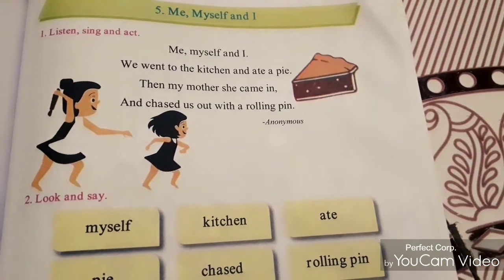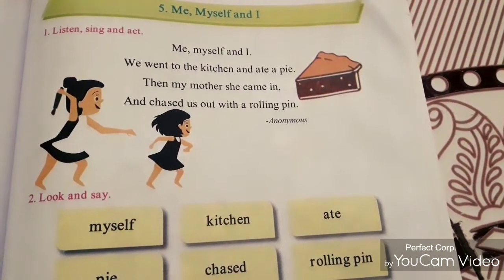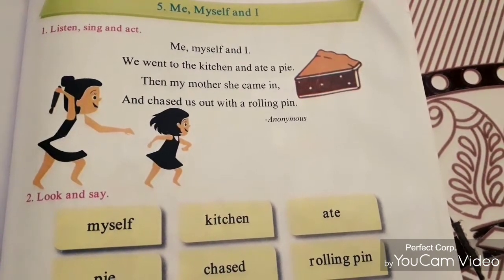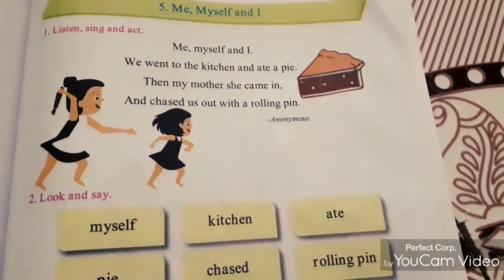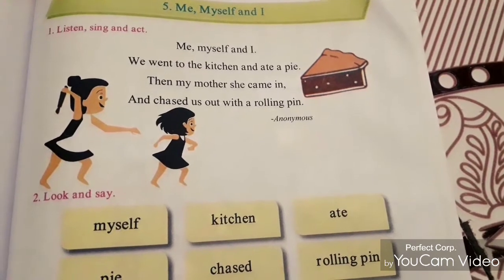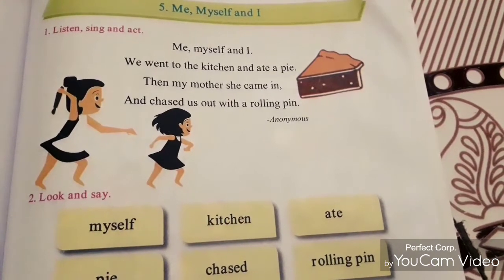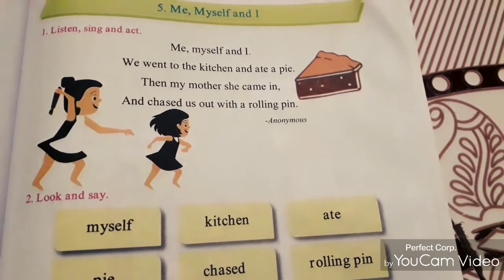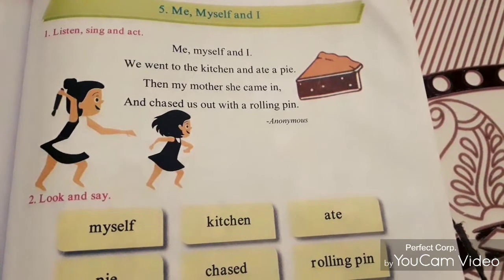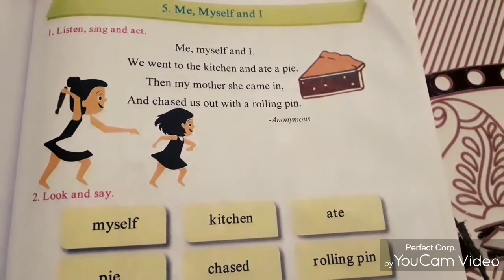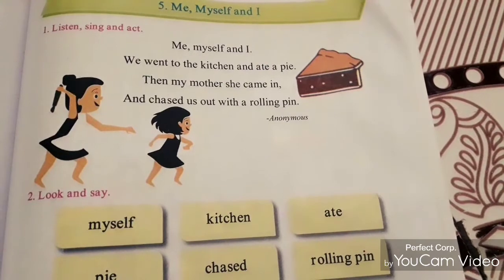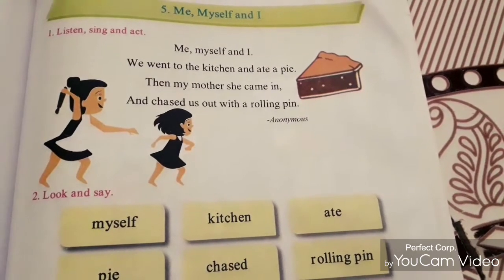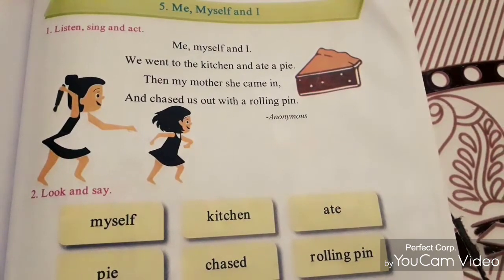With the help of this textbook, we are going to learn a poem about Me, Myself and I. Me, Myself and I — these three words are the same. It means I am, I am, I am. Do you understand? So, this is a poem about Myself.